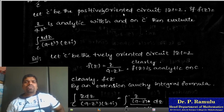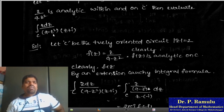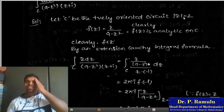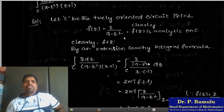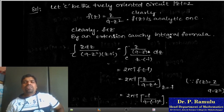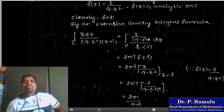Taking another problem. Let C be the positively oriented circuit mod z = 2. If f(z) = z/(9 - z²) is analytic within and on C, evaluate the integral over C of z dz / [(9 - z²)(z + i)]. Let C be the positively oriented circuit mod z = 2. f(z) = z/(9 - z²). Clearly f(z) is analytic on C because the singularities of 9 - z² occur at z = ±3, which lie outside the disk mod z = 2.